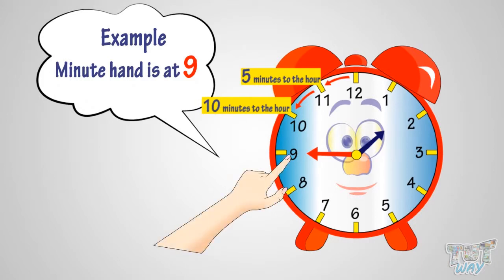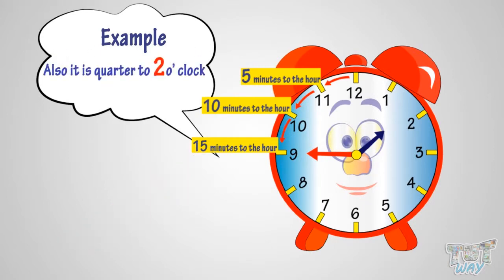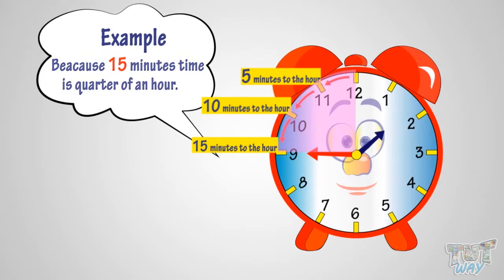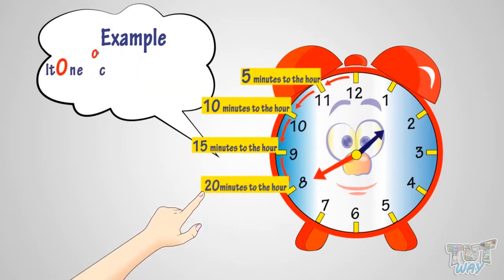So it's fifteen minutes to two o'clock. You can also say it is quarter to two o'clock, because fifteen minutes is a quarter of an hour. Here the minute hand is at eight, so it's twenty minutes to two o'clock.